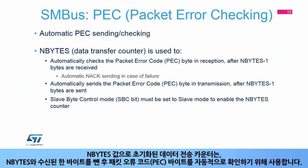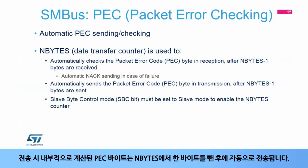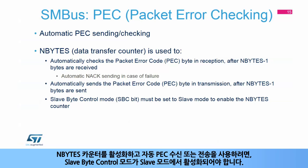The data transfer counter initialized with the nbytes value is used to automatically check the PEC byte in reception after nbytes minus 1 byte are received. If the received PEC byte does not match the calculation, a not acknowledge is automatically sent after the PEC byte. In transmission, the internally calculated PEC byte is automatically sent after the nbytes minus 1 byte. Slave byte control mode must be enabled in slave mode in order to enable the nbytes counter and allow automatic PEC reception or transmission.